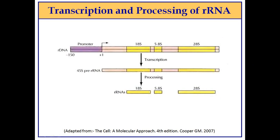In eukaryotes, all RNAs undergo processing after they are synthesized. RNA polymerase 1 transcribes ribosomal RNA in the form of a 45S pre-rRNA, which undergoes processing and eventually forms the 18S, 5.8S, and 28S rRNA.